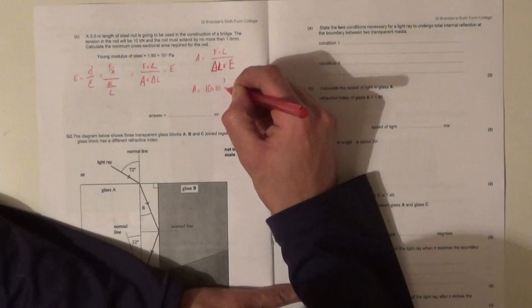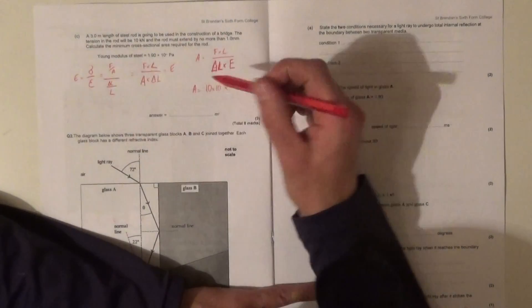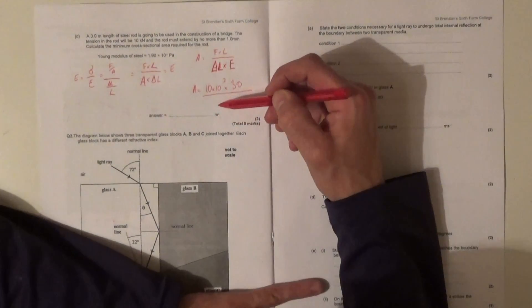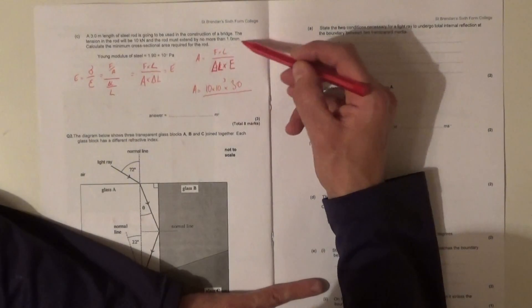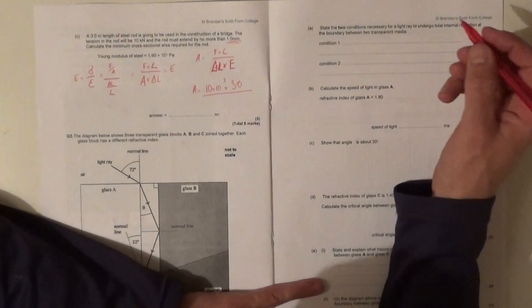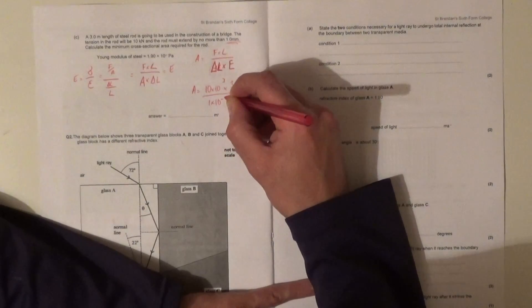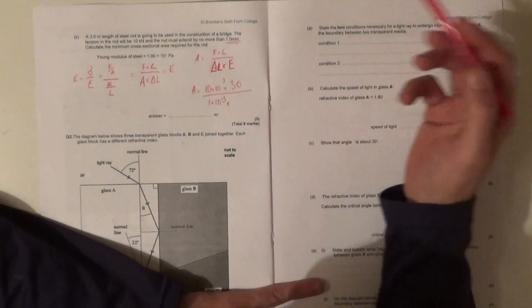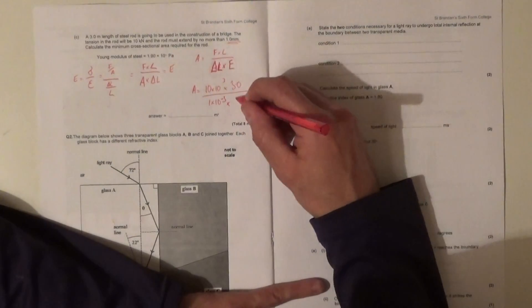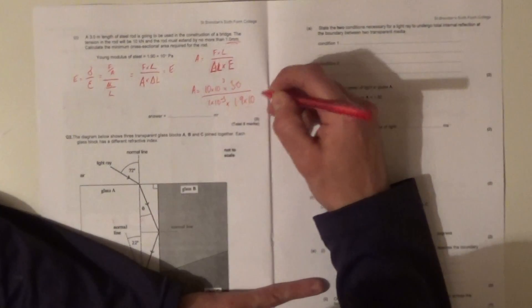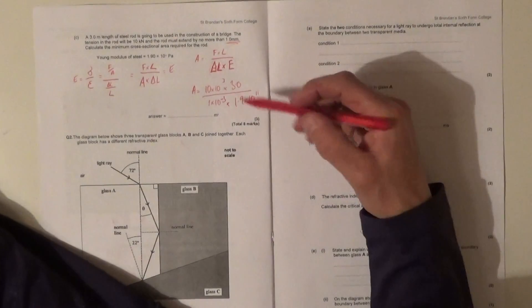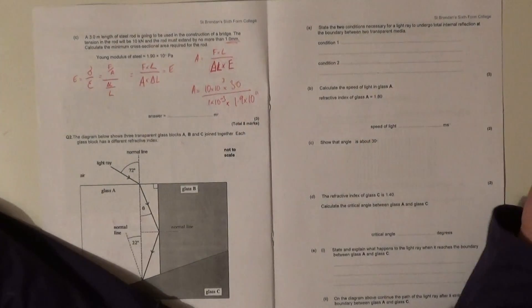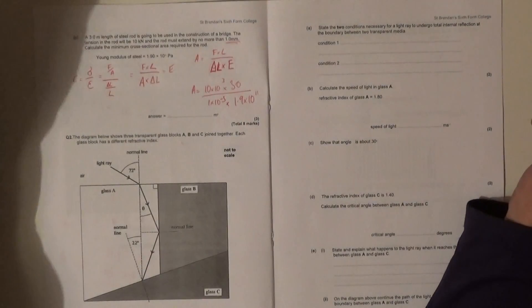You've got given in the data sheet, so your area is going to be equal to the force which is 10 kilonewtons times 10 to the 3, times by the length which is 3.0 meters, divided by the extension, the maximum permissible extension which is 1 millimeter, so that's 1 times 10 to the minus 3.